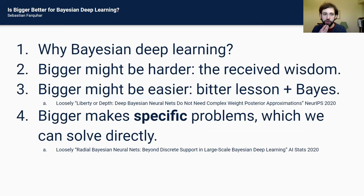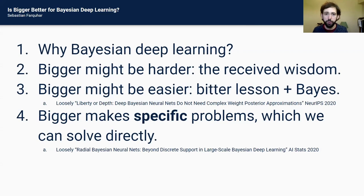The structure of the talk is something like this. First, I'll give a brief introduction to Bayesian deep learning — why we want to do it and what it is. This won't take you all the way up to being able to do Bayesian deep learning if you've never heard about it before, but should give you enough of the basic concepts to understand the rest of the talk without boring people who already know everything.